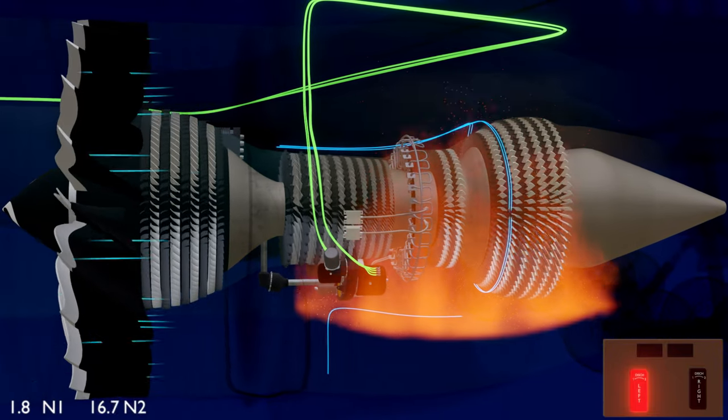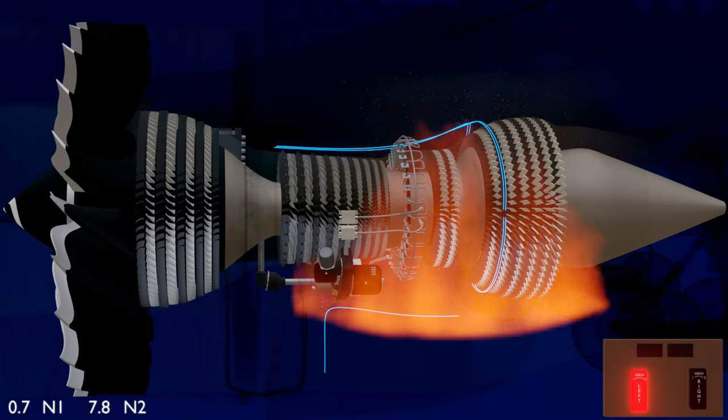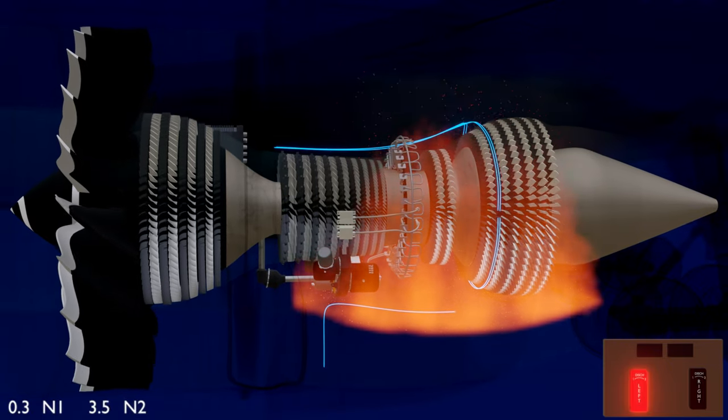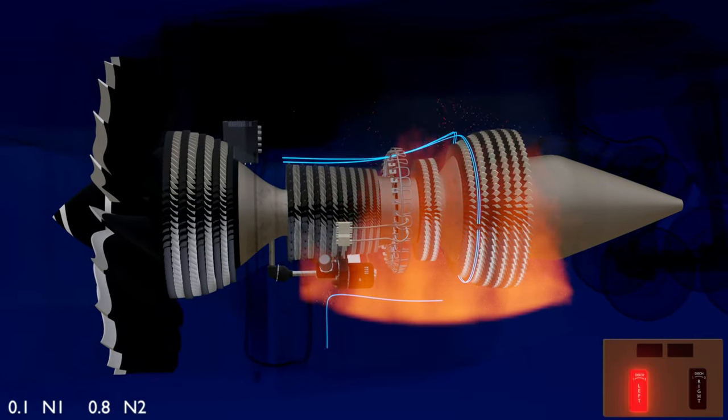The breakers of the integrated drive generator and the backup generator are tripped. By pulling the switch, the engine is starved of all possible sources that might have caused the fire.